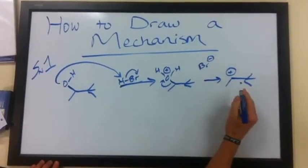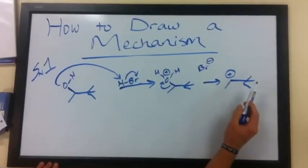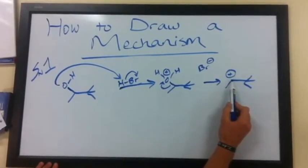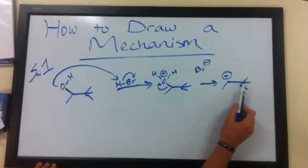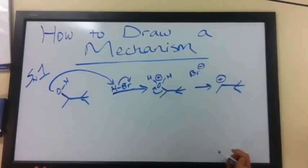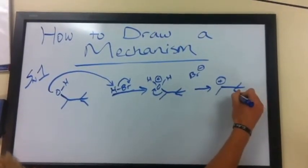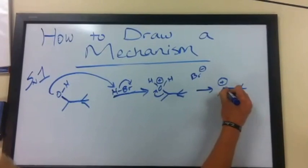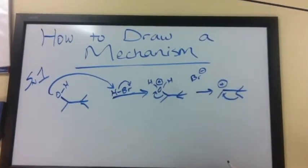As you remember, this is an unstable carbocation because the charge is held on a secondary carbon when you actually have a quaternary carbon over here. So therefore, a methyl shift can occur, a rearrangement, in order to make a more stable carbocation.